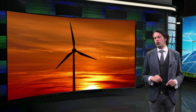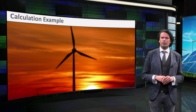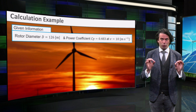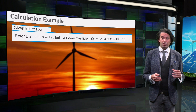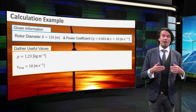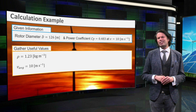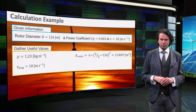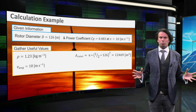Let's use what we have learned so far. We will take the Enercon E-126 wind turbine as an example. It has a rotor diameter of 126 meters and a power coefficient of 0.483 at a wind speed of 10 meters per second. First of all we need to gather the appropriate values. The density of air is 1.23 kg per cubic meter. Furthermore, we will assume 10 meters per second as an average yearly wind speed at the location of our Enercon turbine. Now we will only need to determine the frontal surface, which is pi times half the diameter squared. This results in approximately 12.5 times 10 to the power 3 square meters.